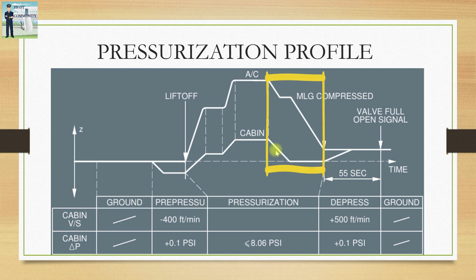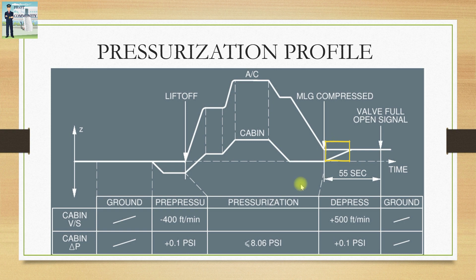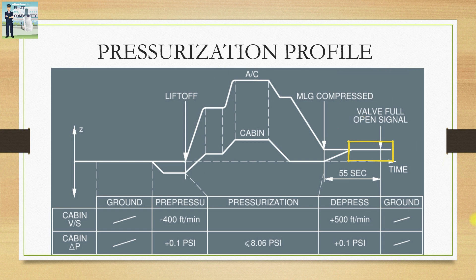The aircraft then begins descending and the cabin begins its continuous descent. An important point: the cabin restricts its rate of descent to 750 feet per minute regardless of the aircraft's rate of descent. At touchdown, the pressure is maintained 0.1 psi higher than the pressure of the aerodrome for the same reason as during takeoff — to avoid foreign objects entering through the outflow valve. Then, 55 seconds after touchdown, the outflow valves begin to open and the pressure normalizes, meaning the delta P becomes zero.